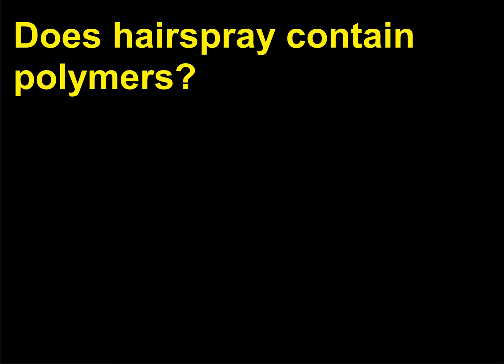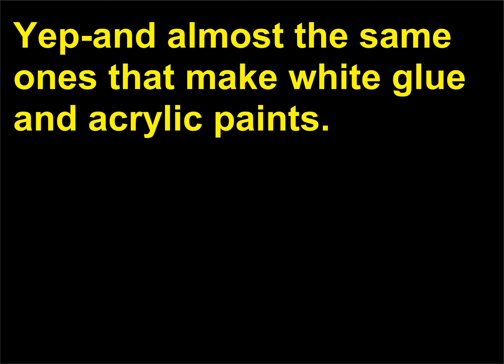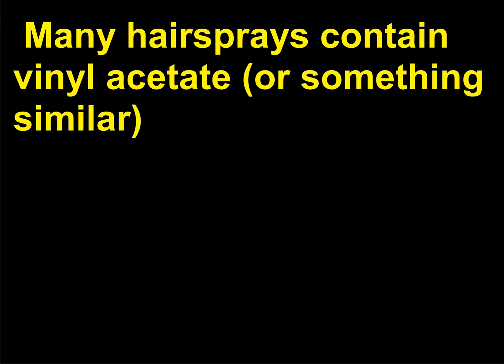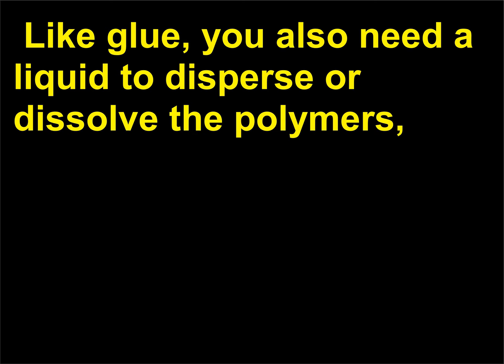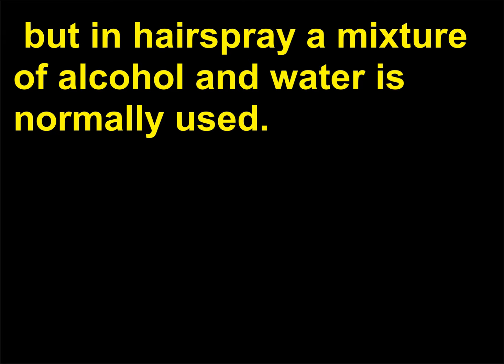Does hairspray contain polymers? Yes, and almost the same ones that make white glue and acrylic paints. Many hairsprays contain vinyl acetate or something similar — polyvinyl pyrrolidone and/or lots of other variants. Like glue, you also need a liquid to disperse or dissolve the polymers. But in hairspray, a mixture of alcohol and water is normally used.